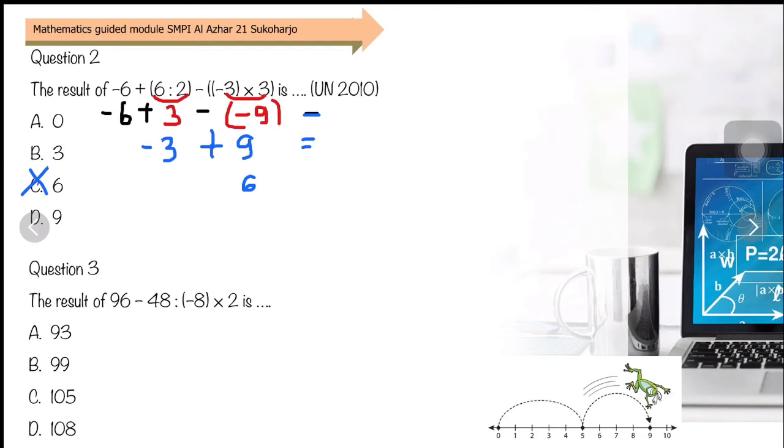Question 3: The result of 96 minus 48 divided by negative 8 times 2. There's subtraction, division, and multiplication. We prioritize division and multiplication. 48 divided by negative 8 is negative 6. Then 96 minus negative 6 times 2. We prioritize multiplication: negative 6 times 2 is negative 12. 96 minus negative 12 equals 96 plus 12 equals 108. So the answer is D.